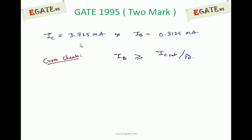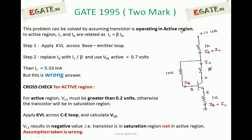You can also solve this problem by assuming the transistor is in the active region. In the active region, IC equals beta times IB. Apply KVL across the base-emitter loop, replace IB with IC/beta, and use VBE active equal to 0.7V. With one equation and one unknown, solving gives IC = 5.33 mA. However, this is not the correct answer.